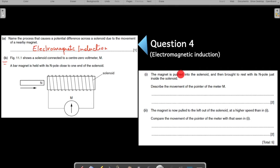So let us go to the question. The magnet is pushed into the solenoid and then brought to rest with its north pole just inside the solenoid. So what is happening? You are moving the magnet near the solenoid. You are creating a motion between the magnet and the solenoid. Describe the movement of the pointer of the meter M. Describe the motion of the pointer. Two points. Why? You have to give two points here in your answer. Why? Because it is a two mark question.